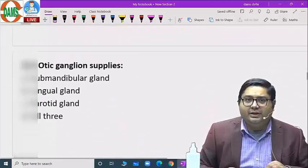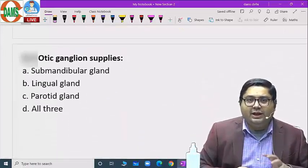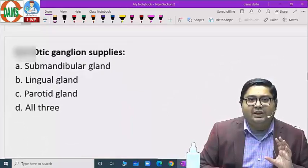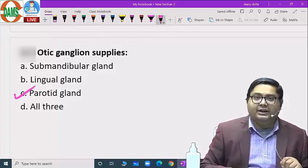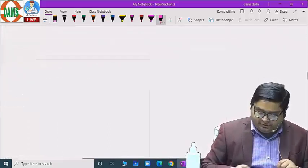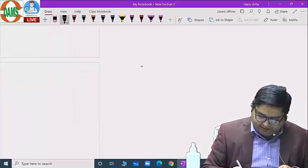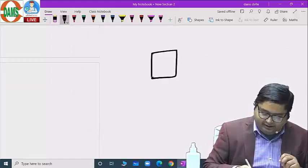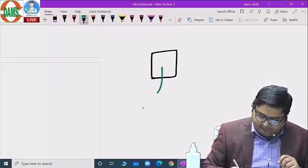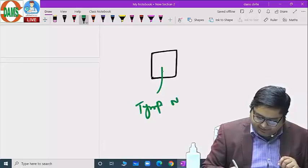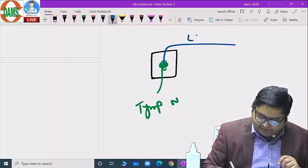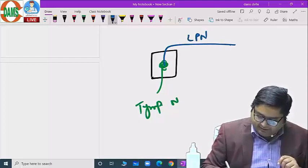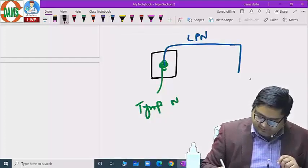Next question is otic ganglion. Otic ganglion will supply parotid gland. Let me explain. We have the medial wall of the middle ear. Here we have the tympanic nerve coming which will make a plexus, and from the plexus there is beginning of the lesser petrosal nerve. Lesser petrosal nerve will pass through the foramen ovale.